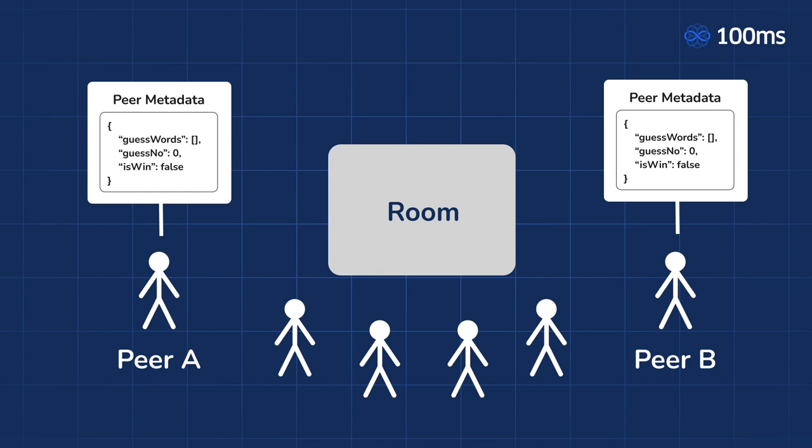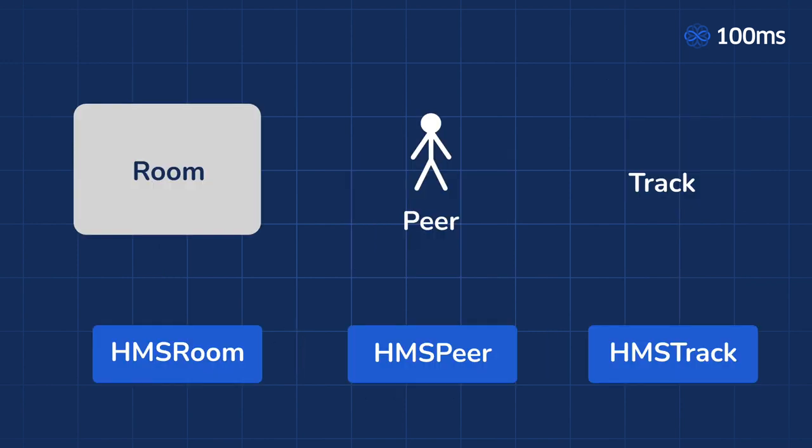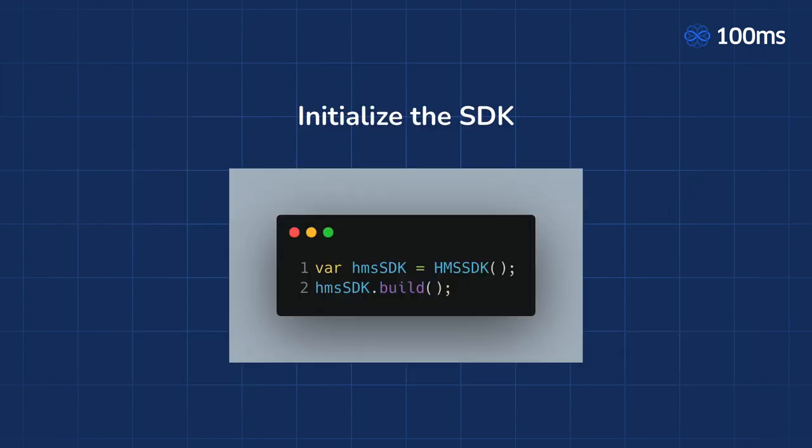This metadata is what we will be using to show the guesses of the players inside the app. From the SDK perspective, a room is represented by an object of class HMSRoom, a peer is represented by HMSPeer, and a track is represented by HMSTrack. Let us now take a look at how to use the 100ms Flutter SDK.